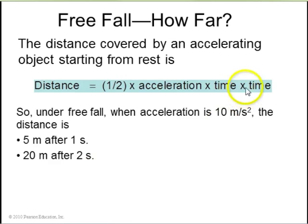After two seconds, 2 squared is 4, times acceleration, 10 meters per second squared is 40, divided by 2, is 20 meters. After three seconds, 3 squared is 9, times 10 is 90, divided by 2, is 45 meters.